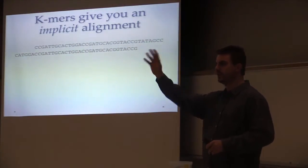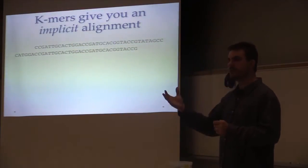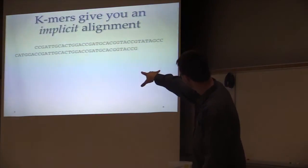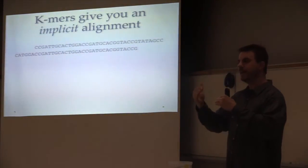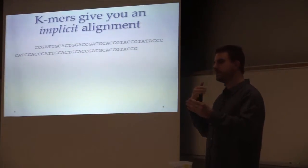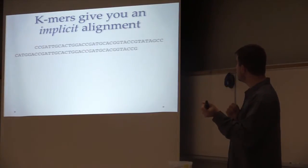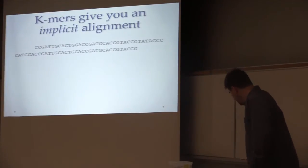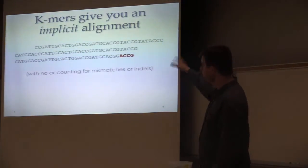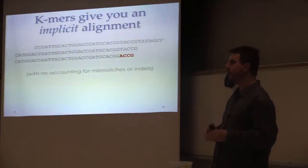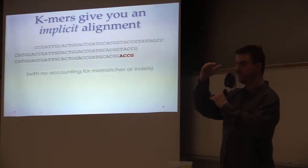Something that I'm throwing against the wall to see what Jared thinks about it is this concept that K-mers give you sort of an implicit alignment. If you take two reads and you line them up based on which K-mers they share, here you can see that we have two reads, and they overlap in the regions that they're aligned to, and that's an exact overlap. So it's a very stringent alignment.